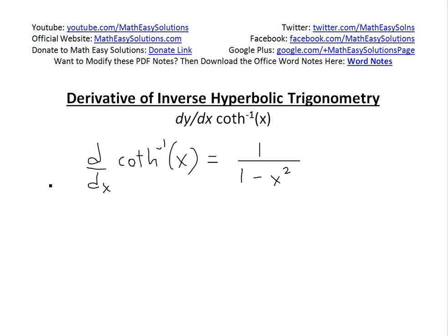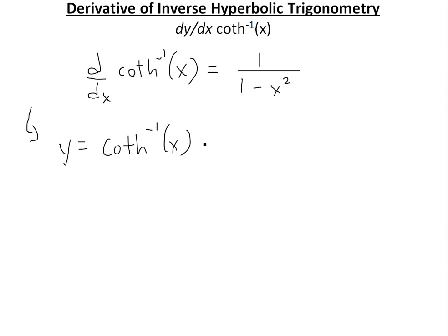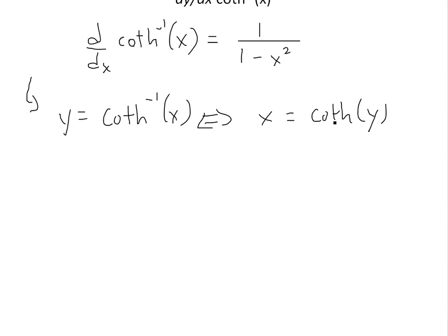The first thing we do is let y equal the inverse hyperbolic cotangent of x. With inverse functions, this is the same as writing x equals hyperbolic cotangent of y. So we just swap x and y, and now we're solving for y.